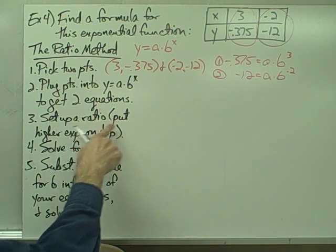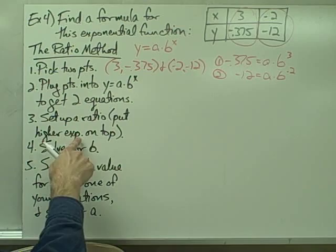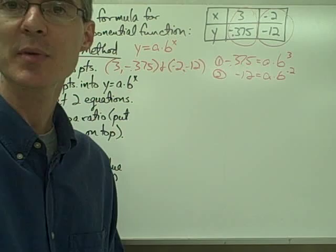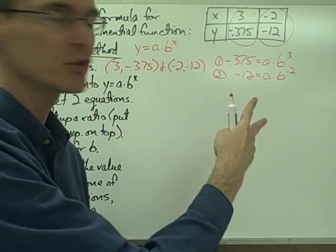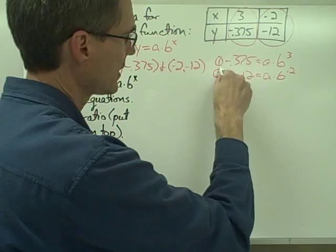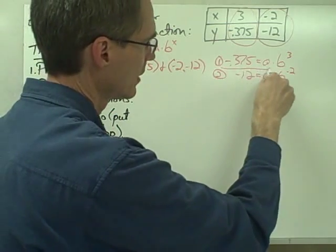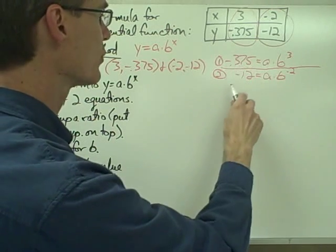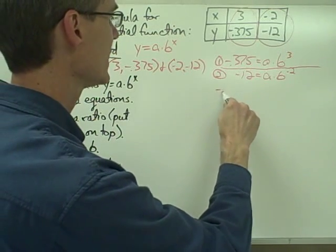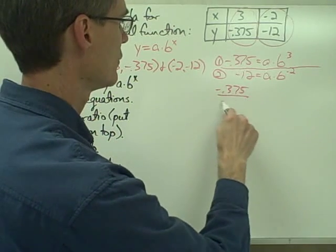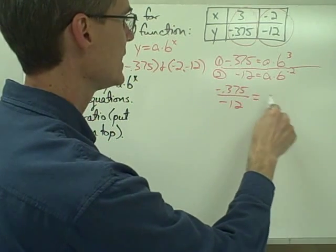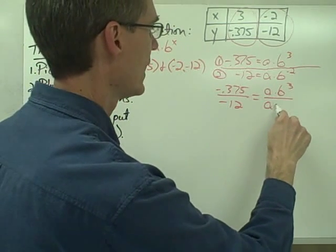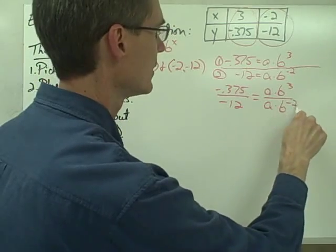Step number three, set up a ratio and put the higher exponent on top. What this means is I'm going to take these two equations and set up a ratio using these two equations. Specifically, if you want to think of just drawing a fraction line between your two equations, then that's going to give you a ratio that looks like this: negative 0.375 over negative 12 equals a times b to the third over a times b to the negative 2.